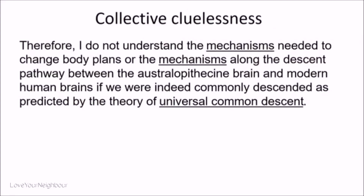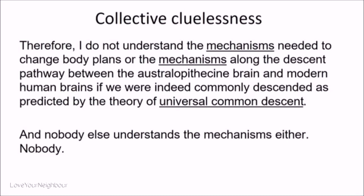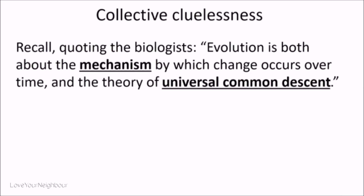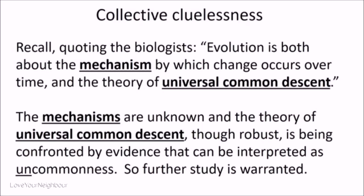So there's collective cluelessness. I don't understand the mechanisms needed to change body plans, or the mechanisms along the descent pathway between australopithecine brains and modern human brains, if we are indeed commonly descended. And nobody else understands the mechanisms either — they can say what they will, but nobody understands it. This is why they avoid me; if they had the answers, they wouldn't. Many people don't say it publicly because it has ramifications for their careers. The mechanisms are unknown and the theory of universal common descent, though robust, is being confronted by evidence that can be interpreted as uncommonist. Further study is warranted.